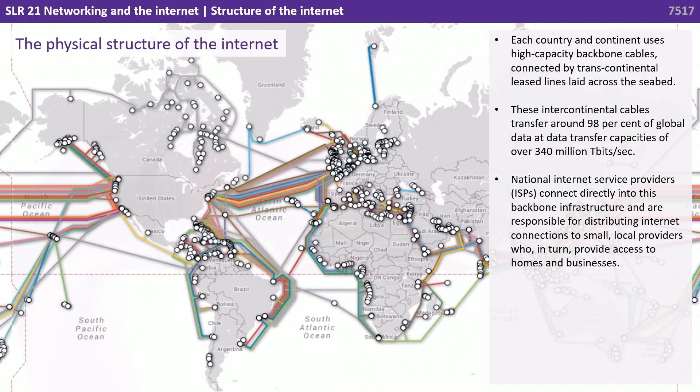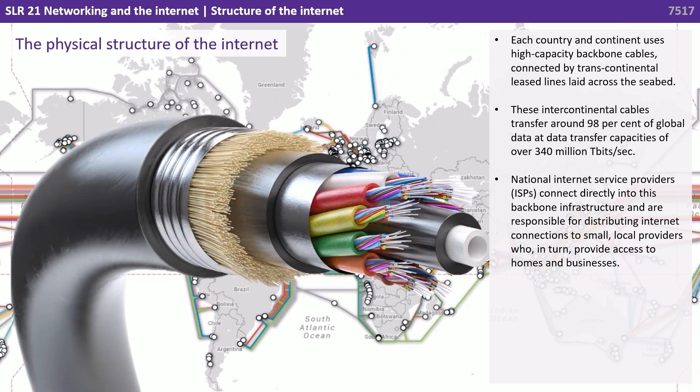Each country and continent uses high-capacity backbone cables connected by transcontinental leased lines laid across seabeds. These intercontinental cables transfer around 98% of global data at data transfer capacities of over 340 million terabits per second. National internet service providers connect directly into this backbone infrastructure and are responsible for distributing internet connections to small, local providers who in turn provide access to homes and businesses.